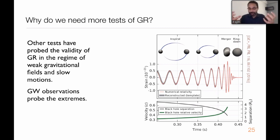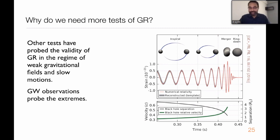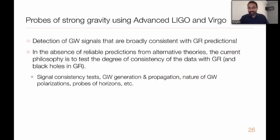Just like if you want to test the standard model of particle physics you collide particles at extreme velocities, if you want to test Einstein's theory, the best place is to collide black holes at extreme velocities. You have these relativistic, compact, massive objects colliding at very, very high speeds. If you were to see some violation of GR, this is where you should expect it. That's why gravitational wave observations are a particularly appealing testing ground for Einstein's theory.